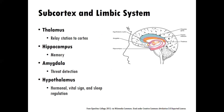We'll learn about the subcortex and the limbic system, and learn about the different components, such as the thalamus, the hippocampus, the amygdala, and the hypothalamus. We'll learn about the role and function of each of those.